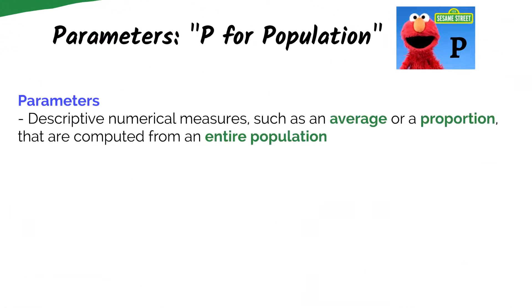Alliteration can be helpful when you need to remember key concepts. Here, we're going to use P for population. A parameter is a descriptive numerical measure, like an average or proportion, that is computed from the entire population.